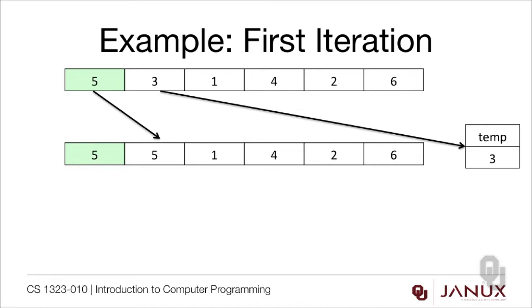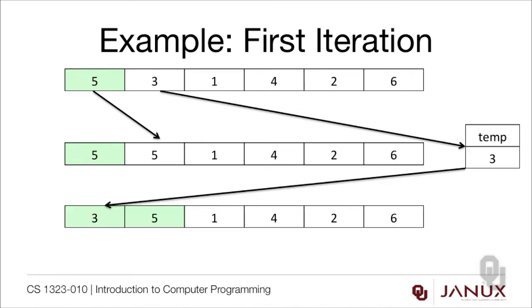Notice at this point we do have 5 twice in the array. The 3 is stored to the side, so we're going to be able to move it back. Because we've hit the end of the array, we can see that 3 has to go in first. So now 3 and 5 are sorted with respect to each other, and we're ready to start our second iteration.